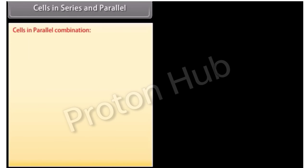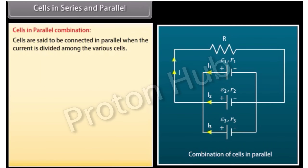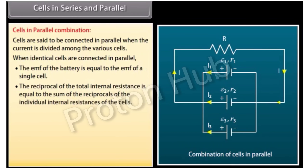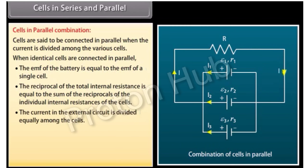Cells are said to be connected in parallel when the current is divided among the various cells. In ordinary parallel connection, all positive terminals are connected together and all negative terminals are connected together. When identical cells are connected in parallel, the EMF of the battery equals the EMF of a single cell, and the reciprocal of total internal resistance equals the sum of reciprocals of individual internal resistances.